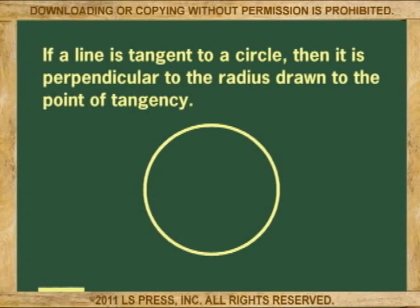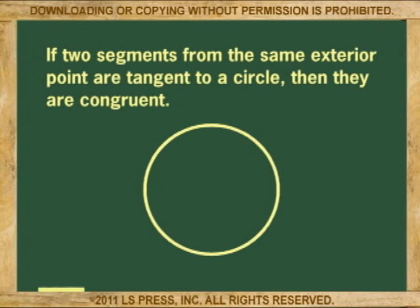If a line is tangent to a circle, then it is perpendicular to the radius drawn to the point of tangency. If two segments from the same exterior point are tangent to a circle, then they are congruent.